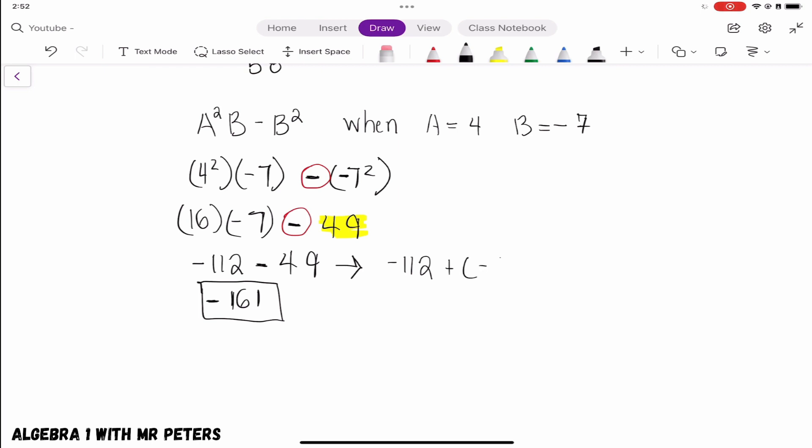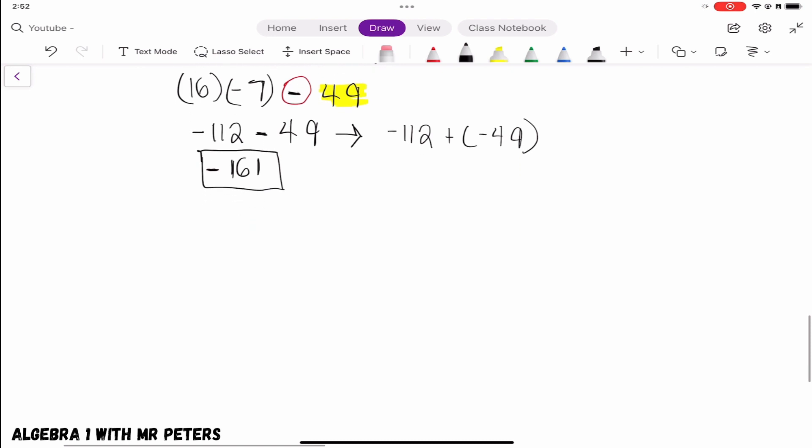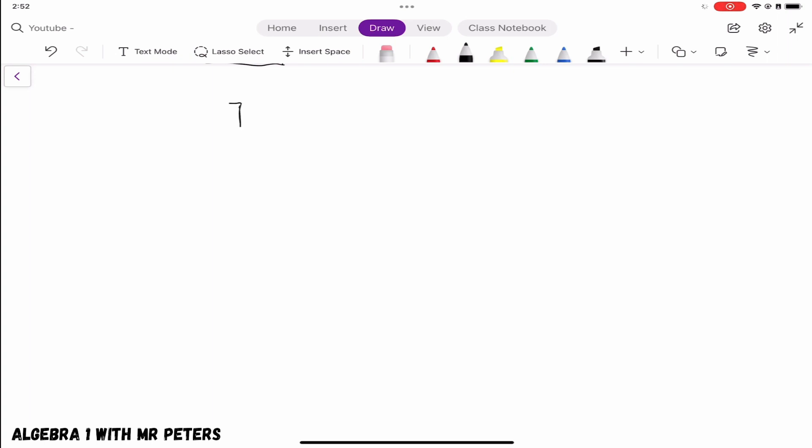And just remember guys, another way to write this is negative 112 plus negative 49, like I just wrote out. All right, so I think we got time for one more problem. So let's look at one more problem. We're evaluating expressions and we have to plug in a negative number and this one has fractions. So let's say we have 7 times C to the second power and we're going to add 5 to that.